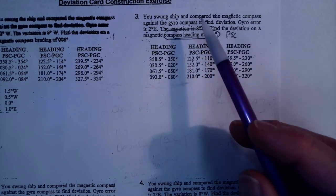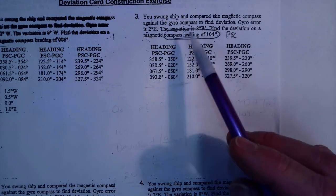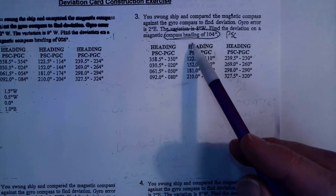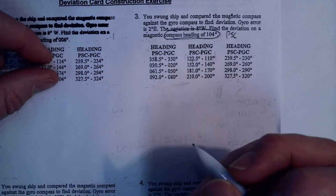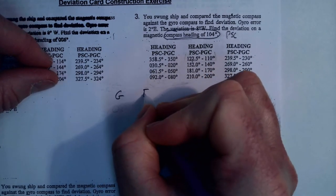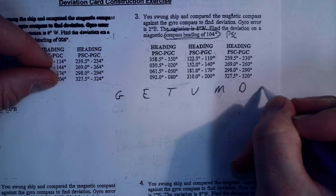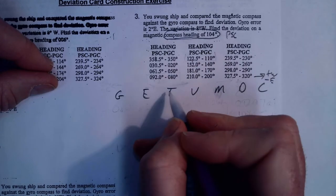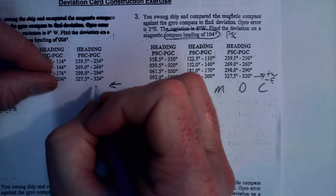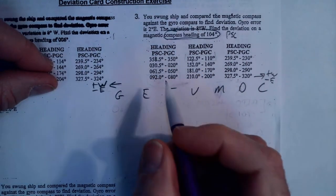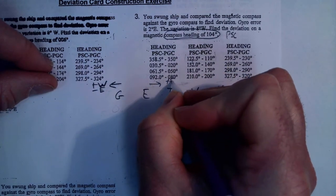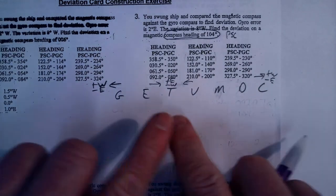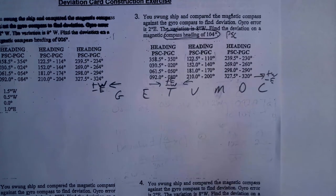We're given a compass heading of 104 PSC. You swung ship and compared the magnetic compass against the gyro compass. Gyro error is 2 East, variation is 8 West. I need to write out my TVMDC. When going from true to compass, add West and subtract East. When going from compass to true, add East and subtract West. The rules change direction at true.